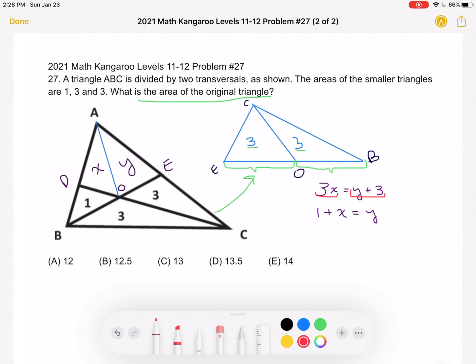We have that 1 plus X is equal to Y. And the way we can figure that out is by looking inside this triangle ABE. Again,